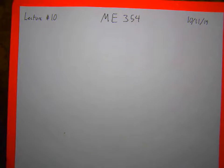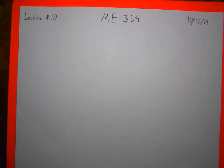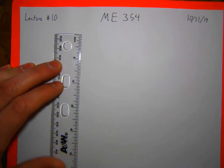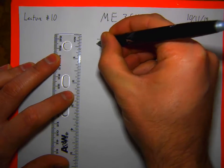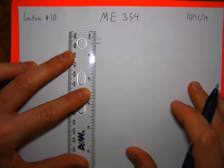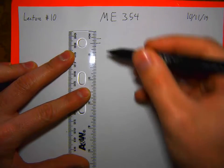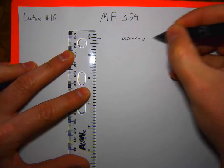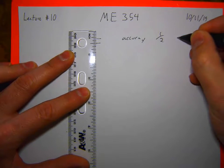A couple things to think about when you're doing error analysis. You have to be thinking about sources of error — where your error is coming from. Generally for this lab it will either be machine error or measurement error. For measurement error, if I have a measuring device and I want to measure the distance between two points, the most accurate that I can measure it is one half the smallest unit of measurement.